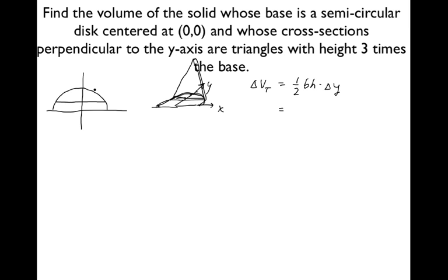So I didn't specify what the radius is, so we're just going to call it R. This is R comma zero, and this is zero comma R. Our answer is going to be in terms of capital R — depending on how big the semicircular disk is, that will determine how big our volume is. R is just like a number, like three or four, and we hold onto the capital R. It's a parameter — a non-changing quantity in this situation. As long as we're doing this problem, R stays fixed.